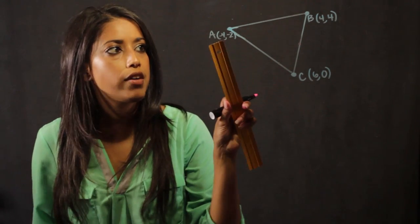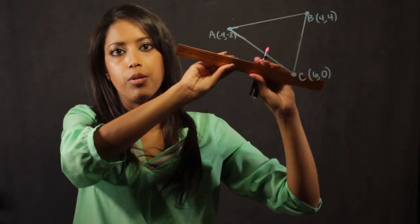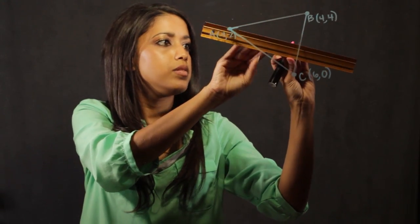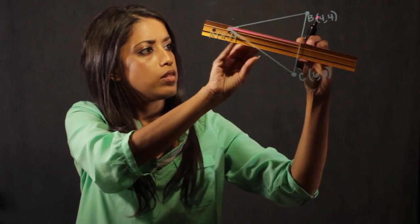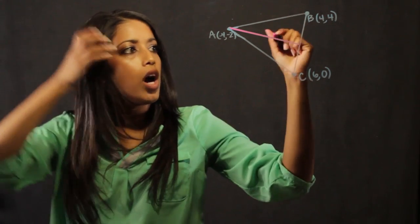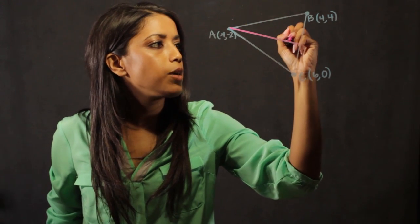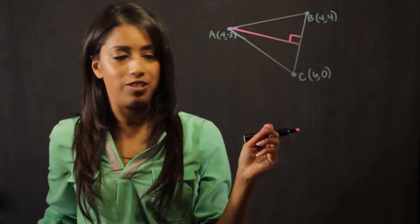We're going to start here at vertex A and go over to line BC and create a line that will represent our altitude. We'll call this line our altitude, and we put this little square here to represent that it's at a 90 degree angle.